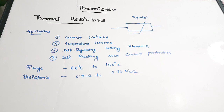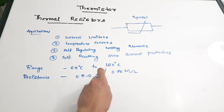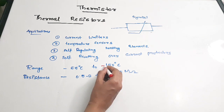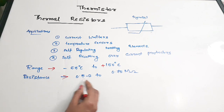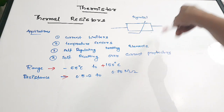Other applications include self-regulating heating elements and self-resetting over-current protectors. The temperature range of a thermistor is from minus 55 degrees Celsius to 150 degrees Celsius, and the resistance ranges from 0.5 ohm to 0.75 mega ohm.